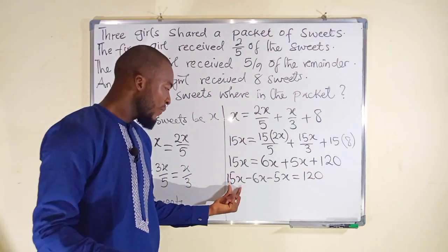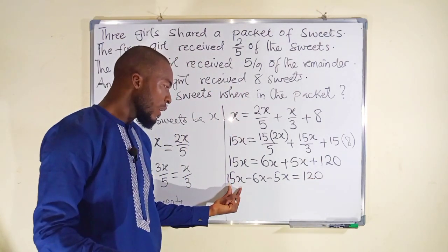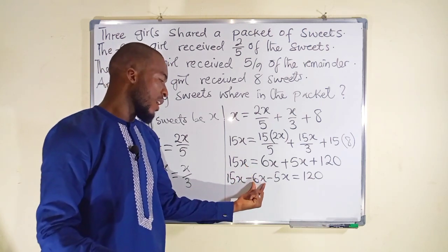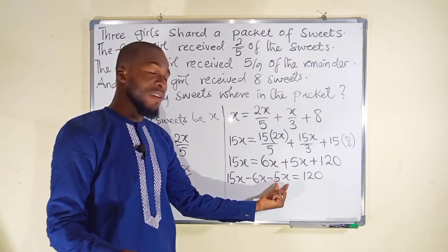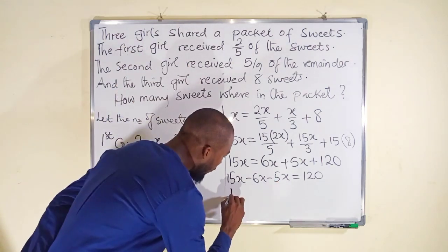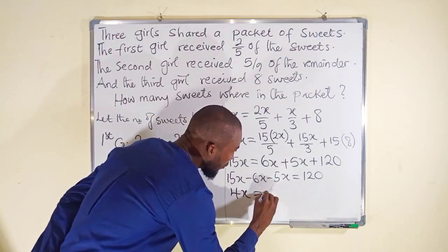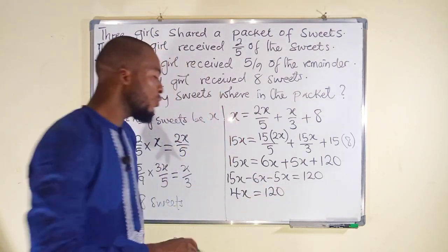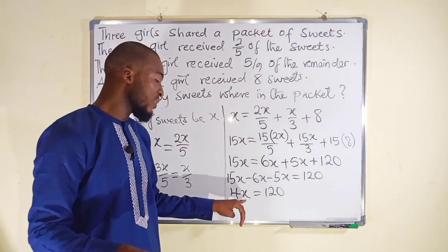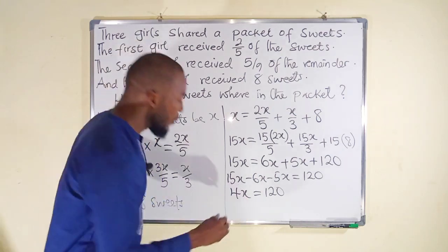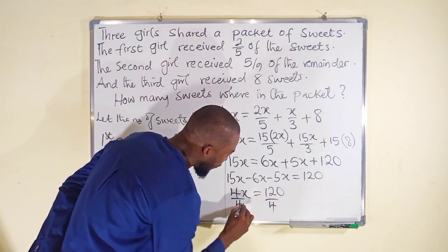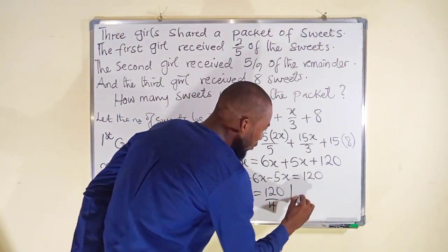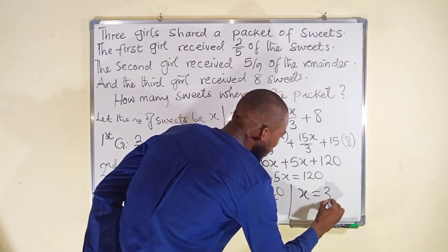Let us further simplify. 15x minus 6x is 9x. Then 9x minus 5x is 4x. So we have 4x here, and to the right we still have 120. Because we are interested in knowing the value of x, we can divide both sides by 4. 4 will cancel 4, and finally you can see that x is equal to 30.